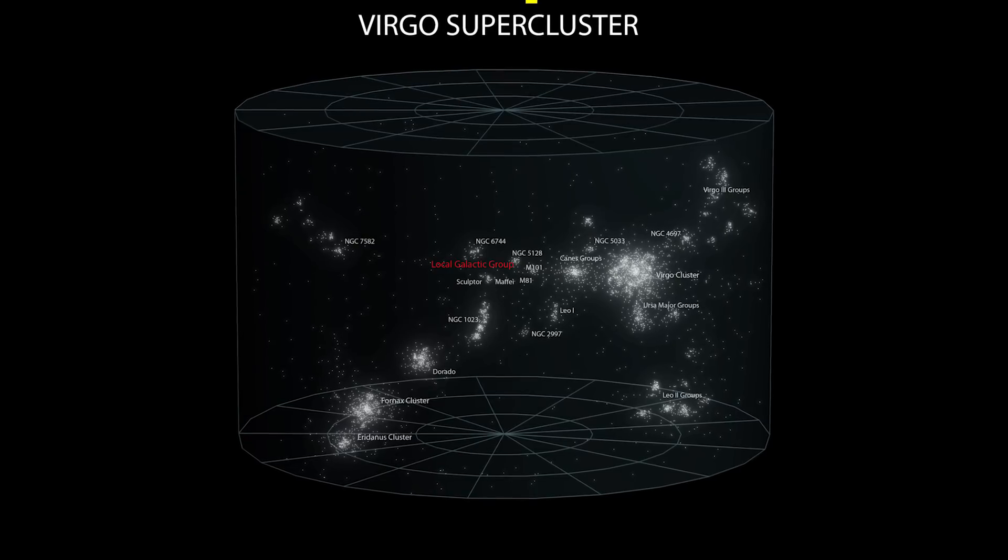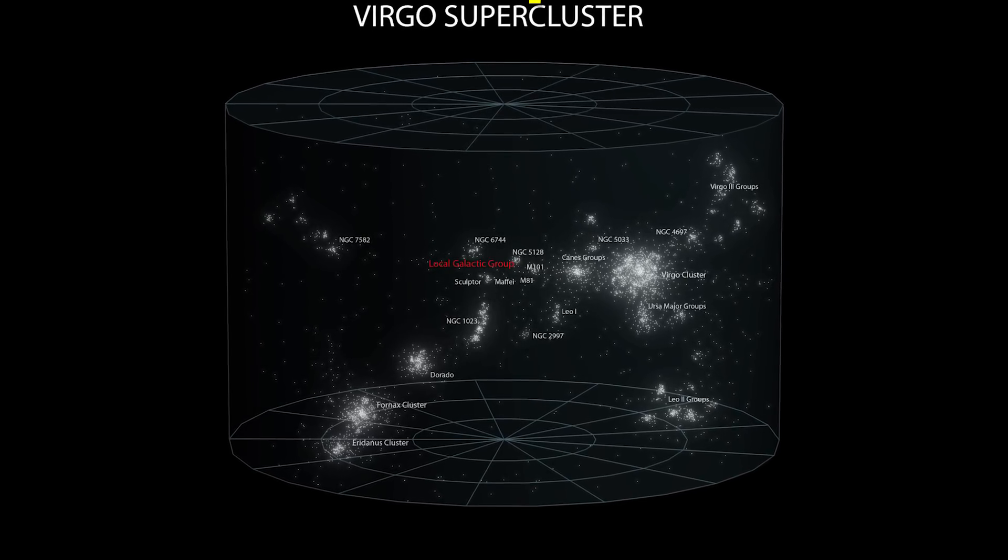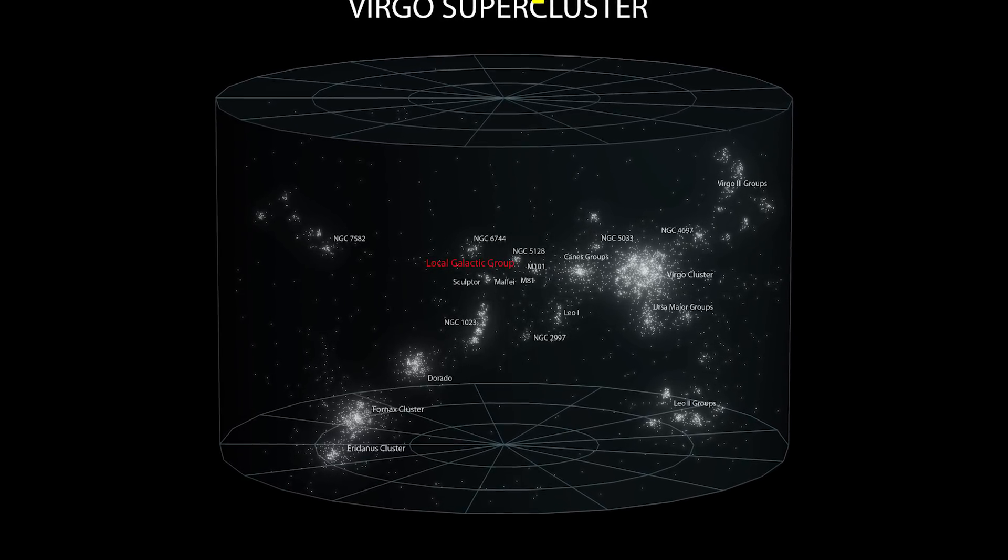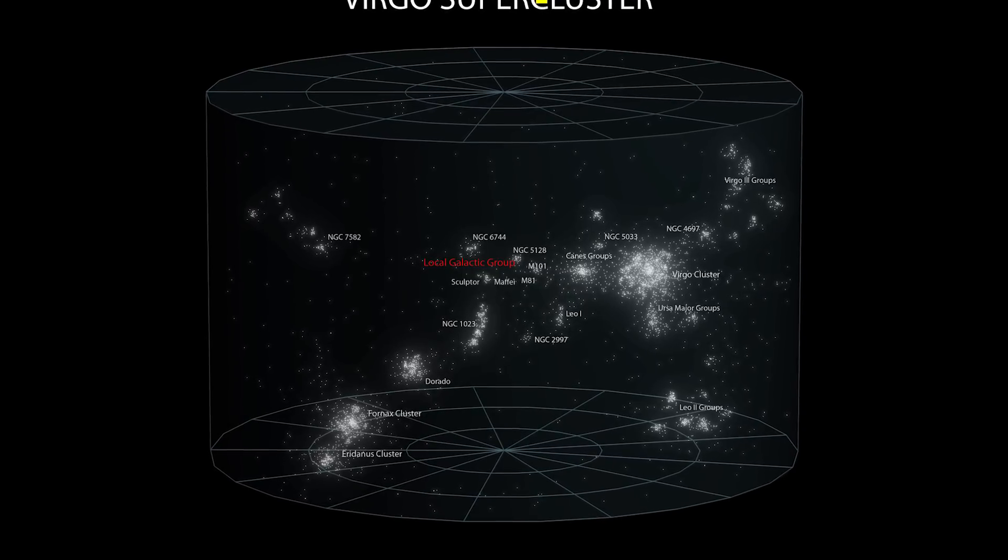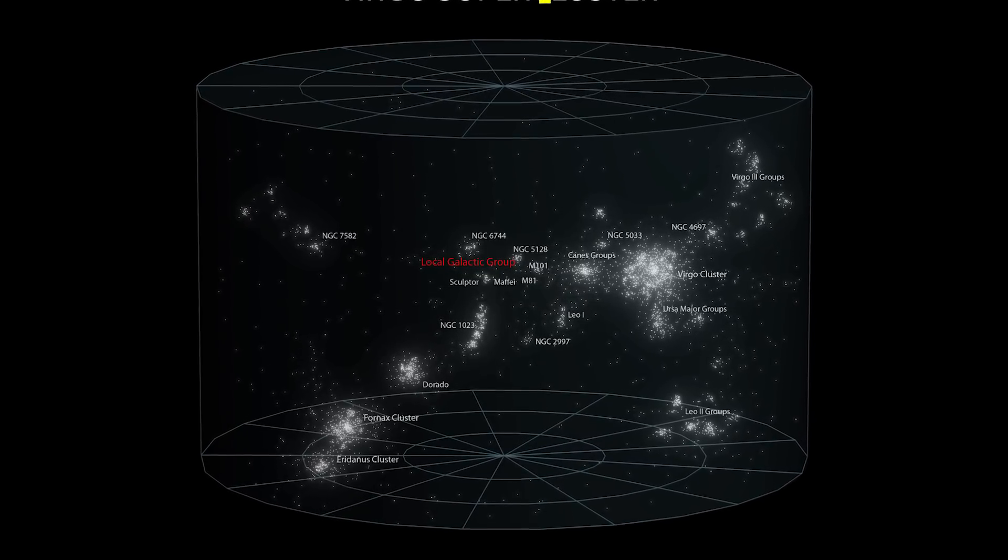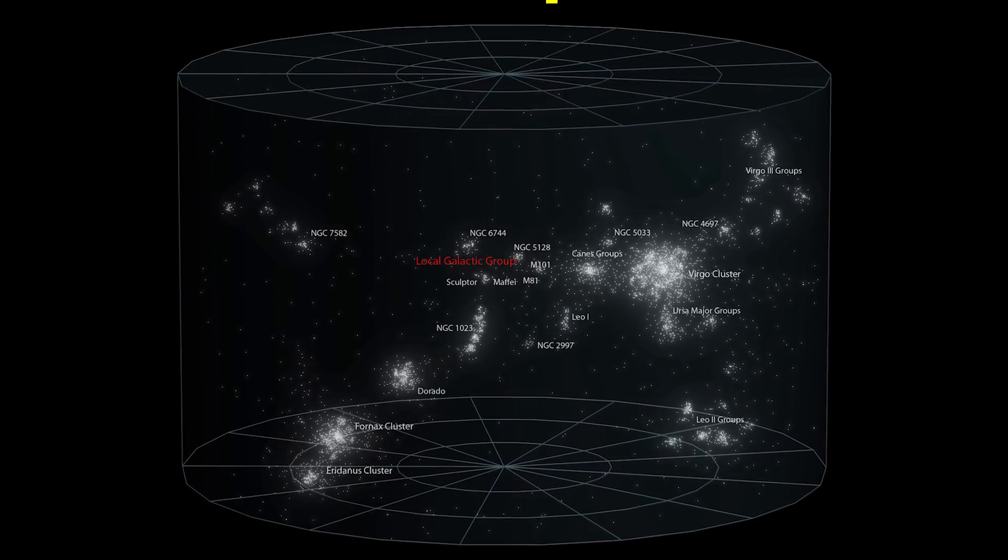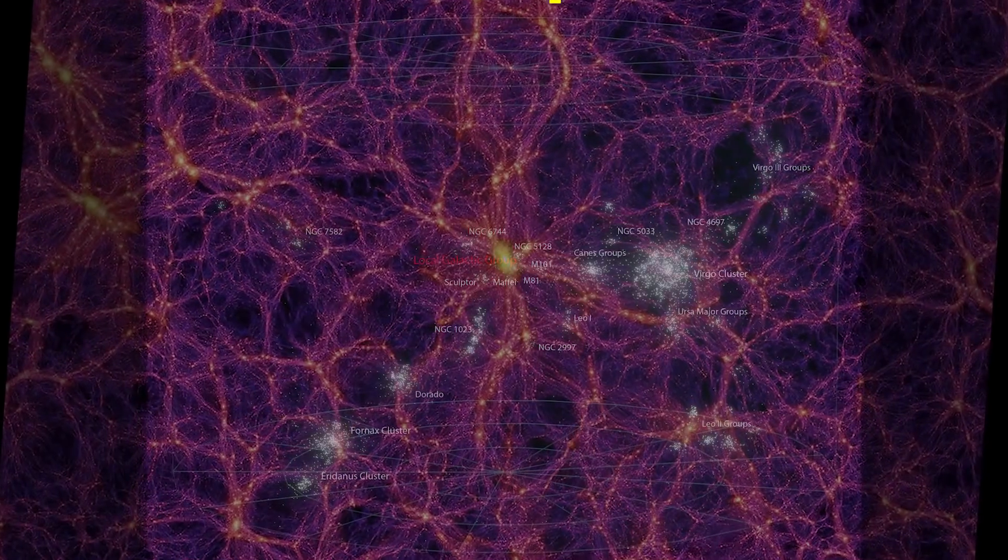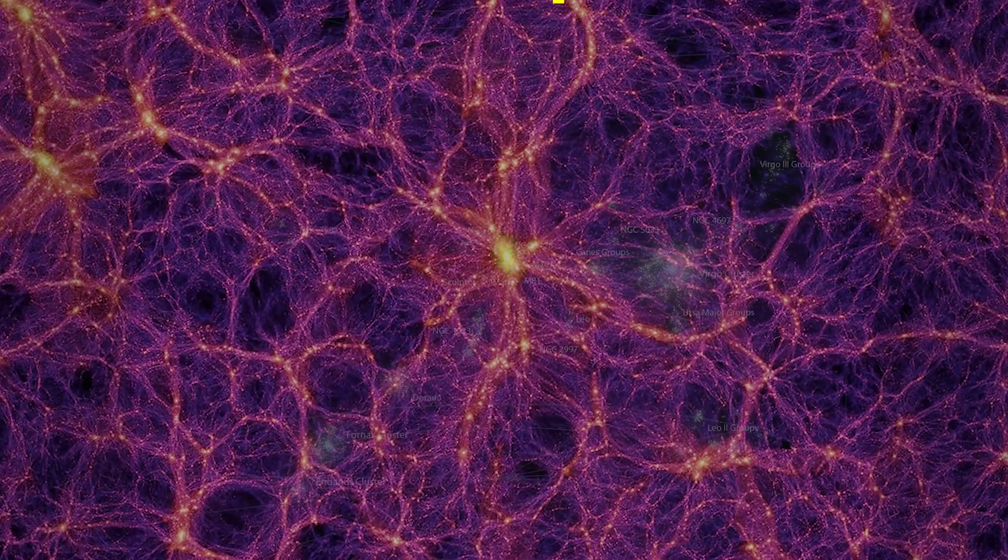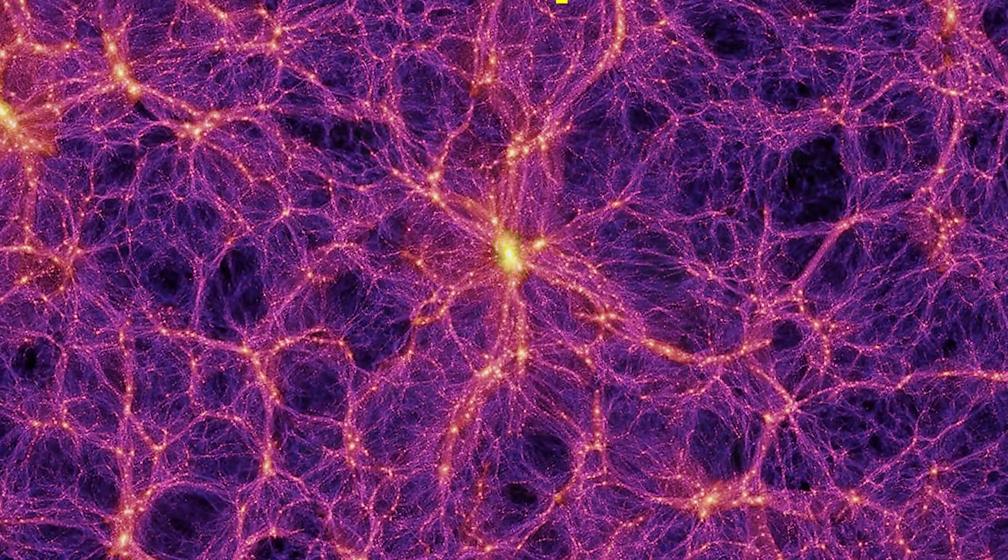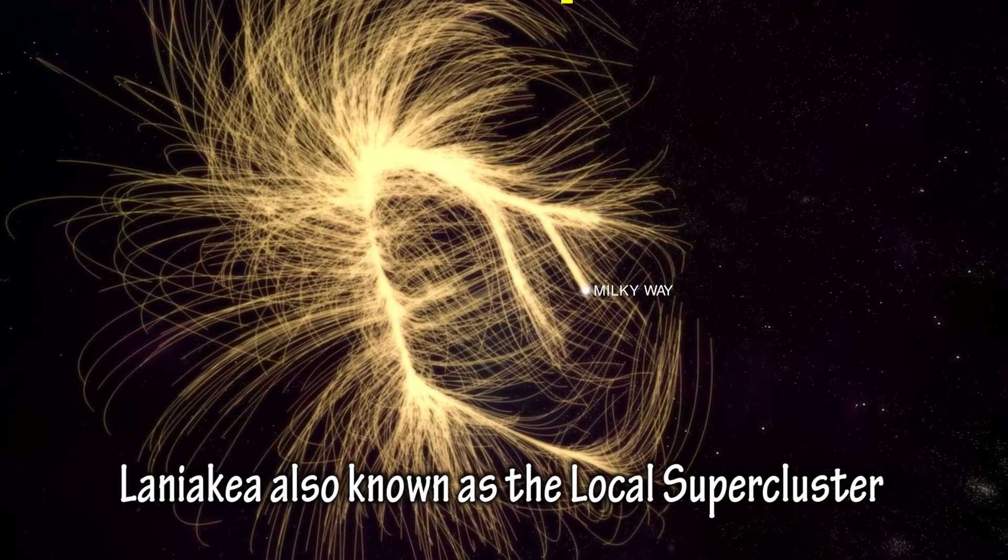The Local Group has a diameter of 10 million light years and is part of the Virgo supercluster, a structure consisting of at least 100 galactic clusters like the Local Group, which form the web-like structures we'll see as we move farther out into the universe. The Virgo supercluster spans 100 million light years in diameter, or 33 megaparsecs.